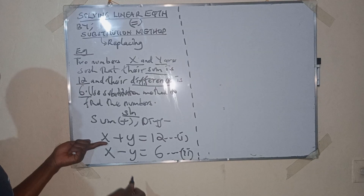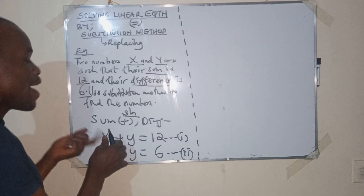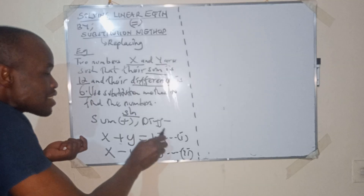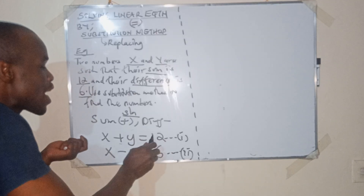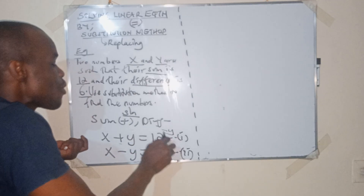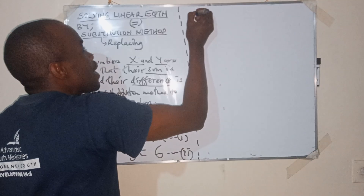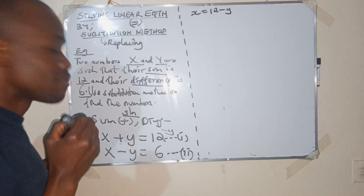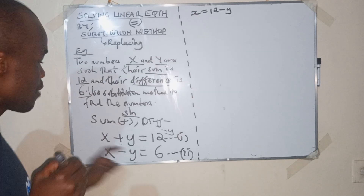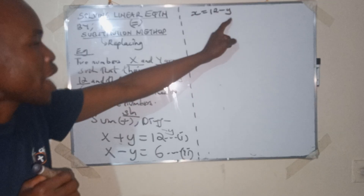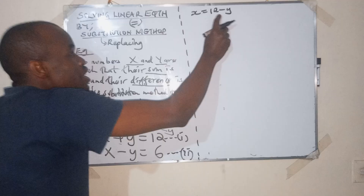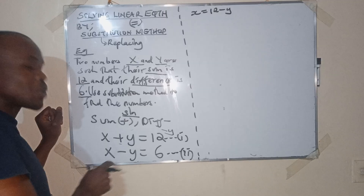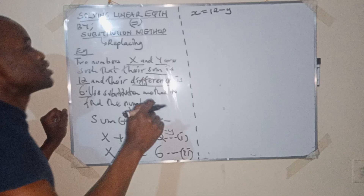For example, if you want to make x the subject formula, x must remain alone. This positive y goes to the other side, becoming minus y. So we have x is equal to 12 minus y. We take this expression 12 minus y and replace it in the second equation — that is what is called substitution.